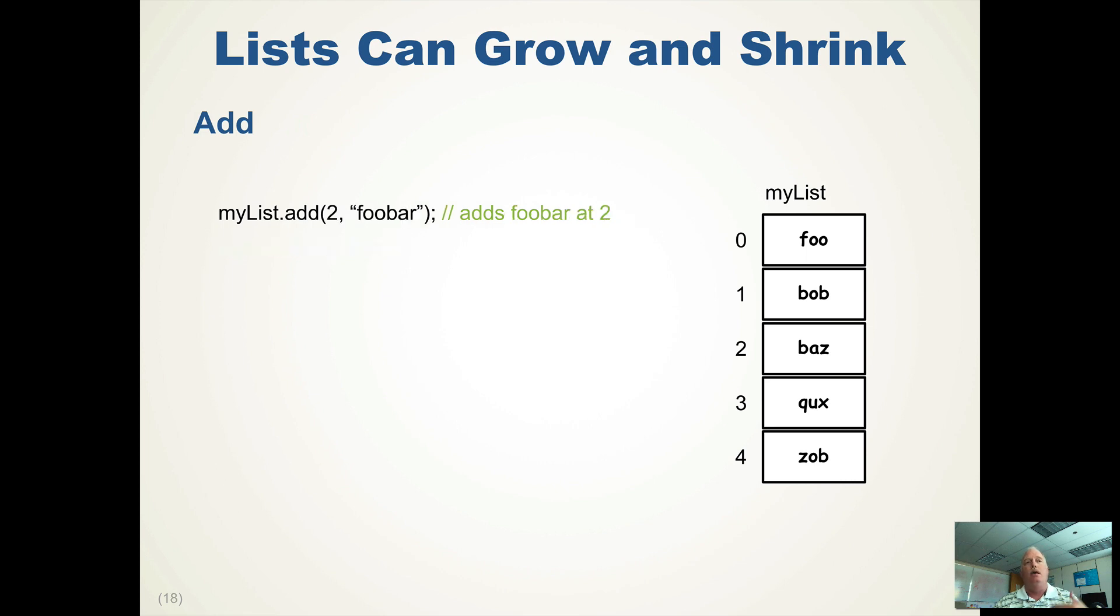I can run the other add method that says I want to add foobar at position two. So what I have to do is I need to put foobar at two, but then I got to move baz, quacks and zob down and increment their index. So you can see how baz is now three, quacks is four, zob is five, and foobar is at two. The size gets updated because we have six items in our list. So size automatically keeps track of how many items in the list.